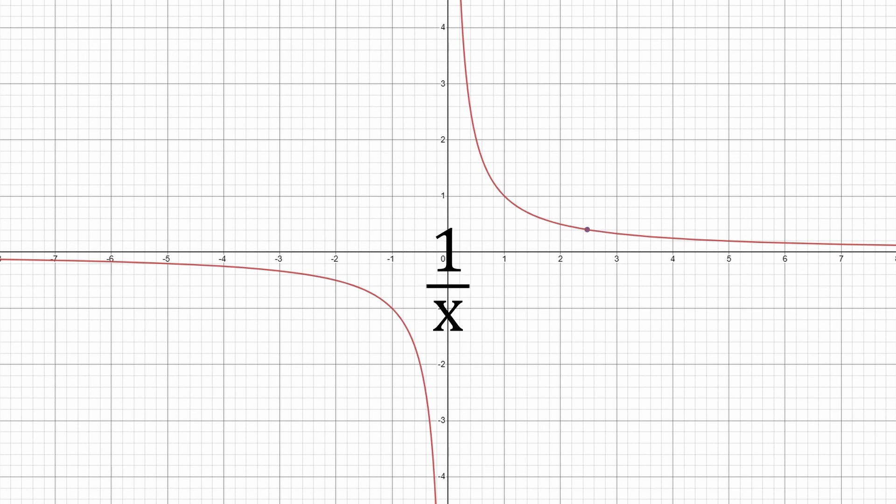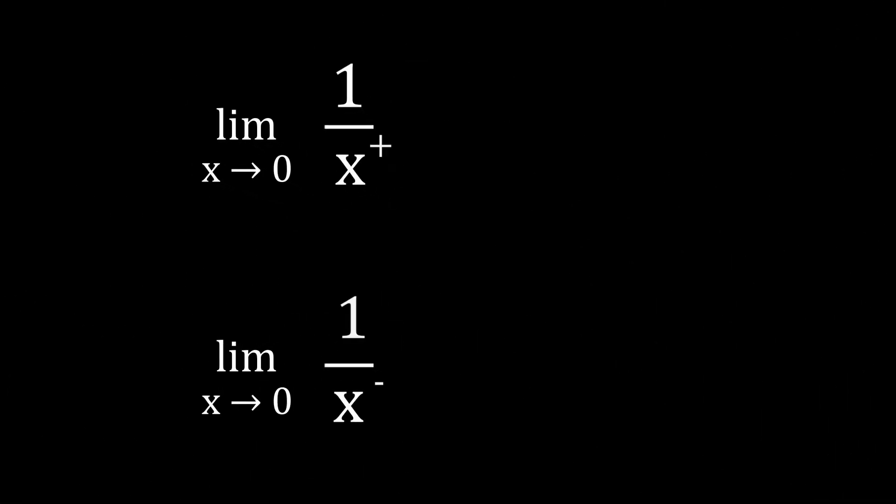the graph 1 divided by x approaches infinity from the right-hand side, but approaches negative infinity from the left-hand side. We can say that the right-hand limit is infinity and the left-hand limit is negative infinity. We notate this in the following manner.